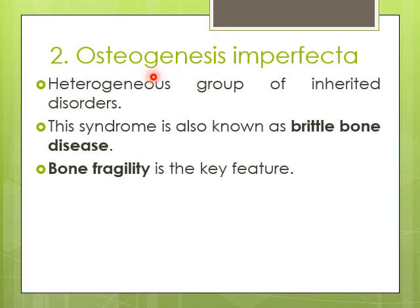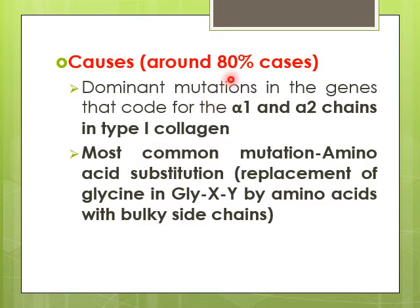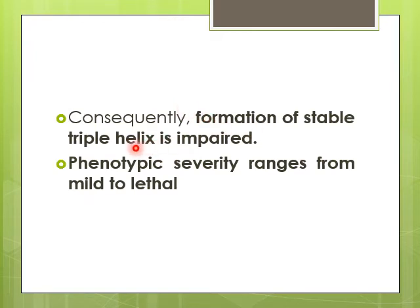The second collagenopathy is osteogenesis imperfecta (OI), also called brittle bone disease, a heterogeneous group of genetic diseases. Its hallmark feature is bone fragility — bones become easily damaged or broken. In approximately 80% of OI cases, mutations occur in genes coding for the alpha-1 and alpha-2 chains of type 1 collagen. The most common mutation is amino acid substitution, replacing glycine in the Gly-X-Y sequence with bulky side-chain amino acids, preventing formation of a stable triple helix. Severity ranges from mild to lethal.